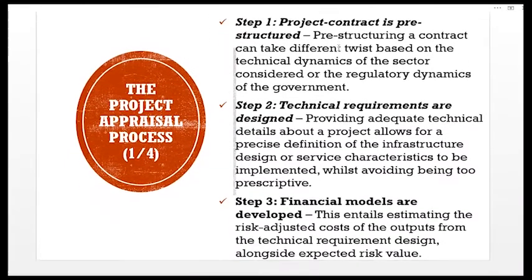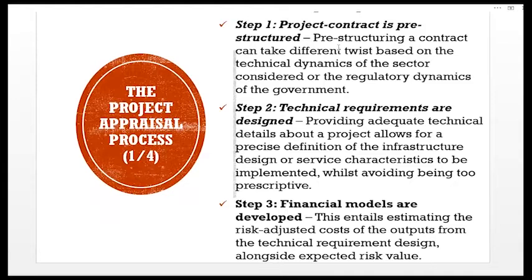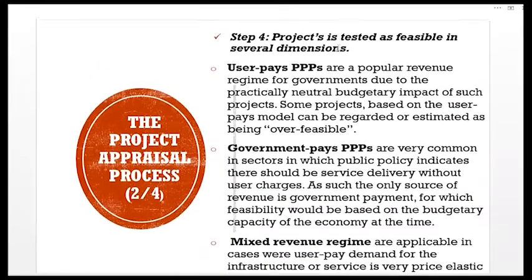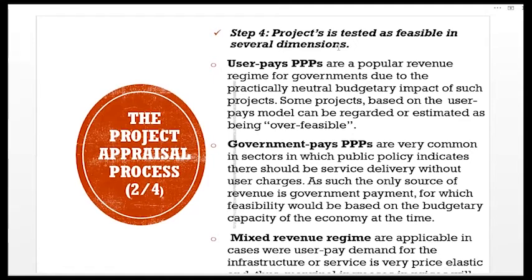Step three: financial models are developed. This entails estimating the risk-adjusted costs of the outputs from the technical requirement design alongside expected risk value. Step four: the project is tested as feasible in several dimensions. User-pays PPPs are a popular revenue regime for governments due to the practically neutral budgetary impact of such projects. Such projects based on the user-pays model can be regarded as over-feasible.